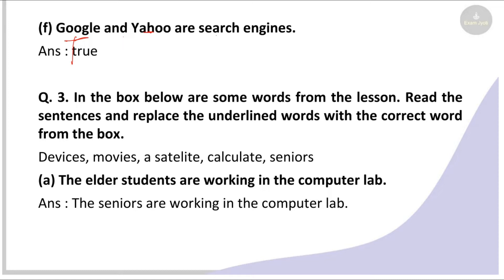Next question: in the box below are some words from the lesson — devices, movies, satellite, calculate, seniors. Read the sentences and replace the underlined words with the correct word from the box. The elder students are working in the computer lab — replace 'elder students' with 'seniors.' So: the seniors are working in the computer lab. There is a tall tower and an electronic device sent into space that moves around the Earth — replace with 'satellite.'